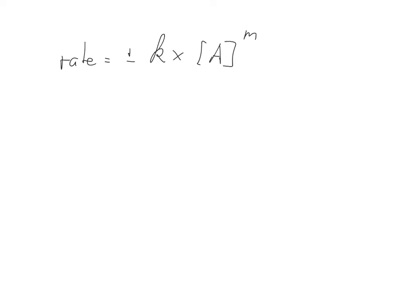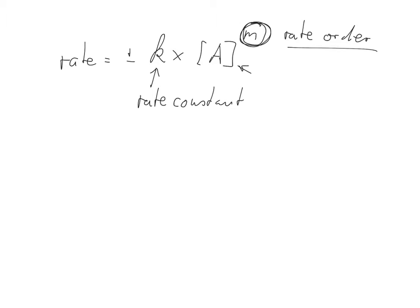Now this here is the rate constant. This here is our compound that we are looking at. And this m here is the rate order of this reaction. And m can basically be anything you want — so m is the rate order.